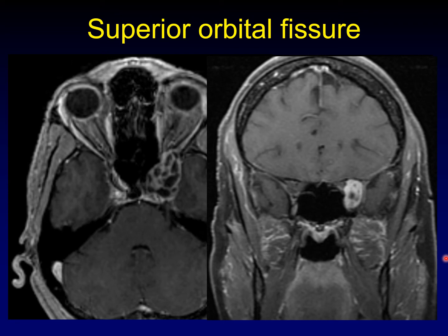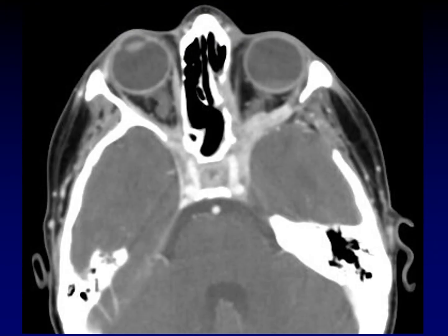Here it is shown on the coronal plane, running through and expanding the superior orbital fissure corresponding to the other side. The third cranial nerve can also carry perineural spread, as from this adenoid cystic carcinoma that arose within the lacrimal gland. It has spread back along the third cranial nerve through the superior orbital fissure and is also extending forward along other branches of the third cranial nerve into the cavernous sinus.